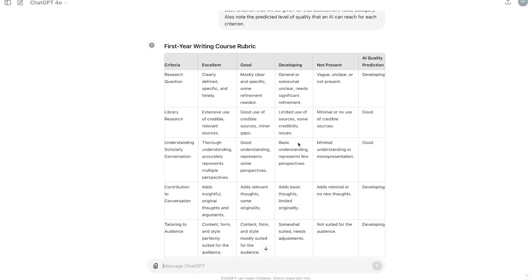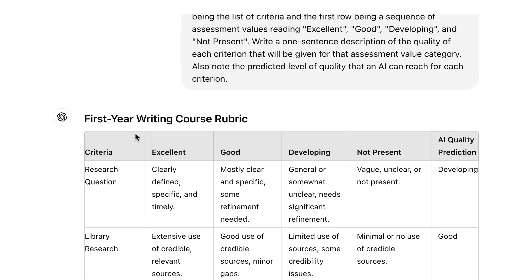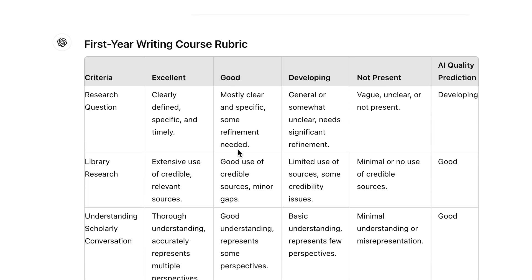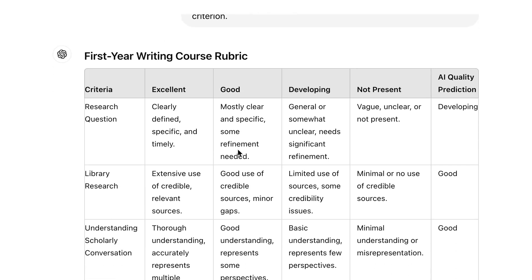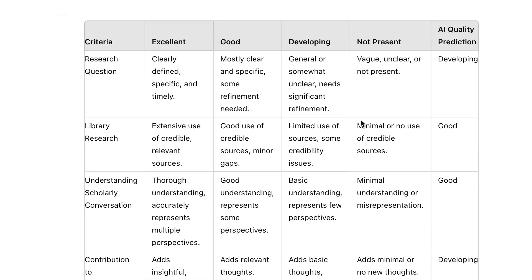Now it's time to review the output. As you can see, my rubric is present in a table format. The first column includes the specific criteria for the assignment. What follows are the assessment values of excellent, good, developing, and not present. There is a very brief description of what those assessment values will look like in practice. And lastly, the final column has the AI quality prediction.